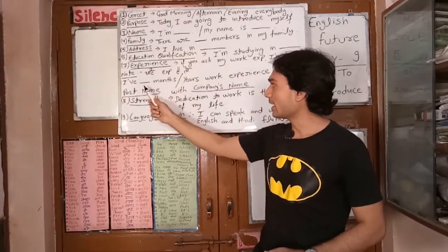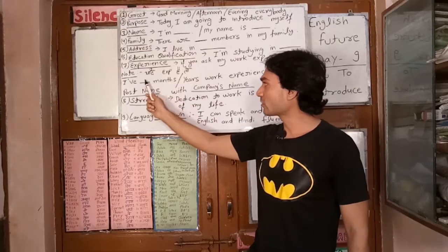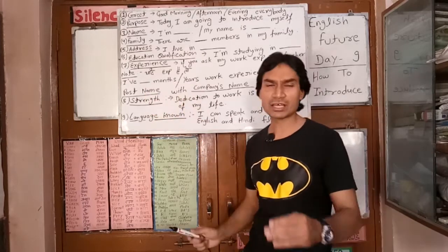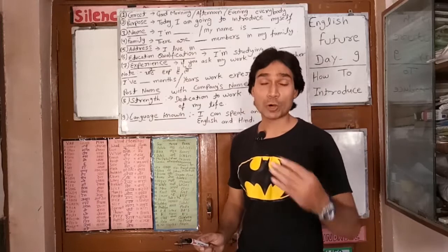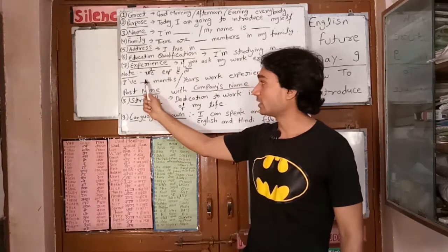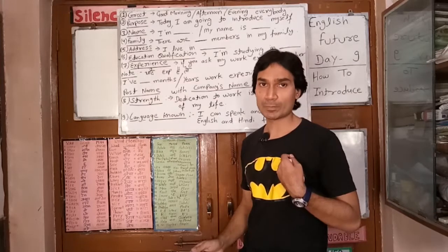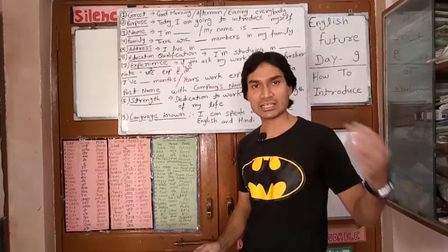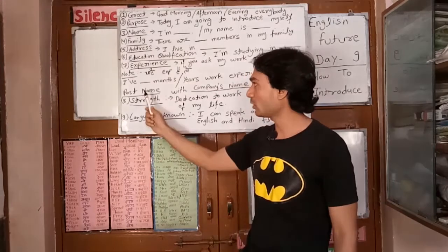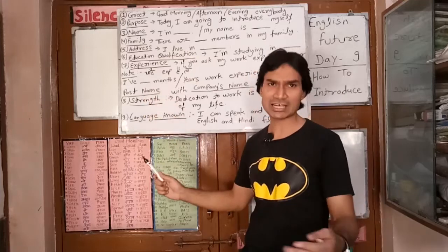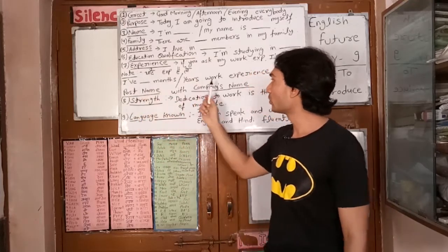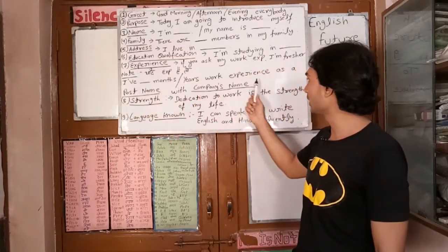And if you have done a job, you will say: 'I have...' and mention the months or years. How many months or years have you done a job? For example, if someone has done a job for six months, you will say 'I have six months of experience,' or if five years, 'I have five years of work experience.'